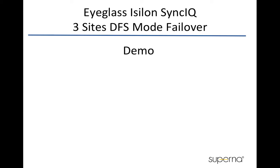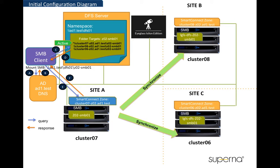This video demonstrates the Eyeglass Isilon SyncIQ for 3-sites DFS mode failover. This diagram shows the configuration for this demo. There are 3 sites: site A, site B, and site C.